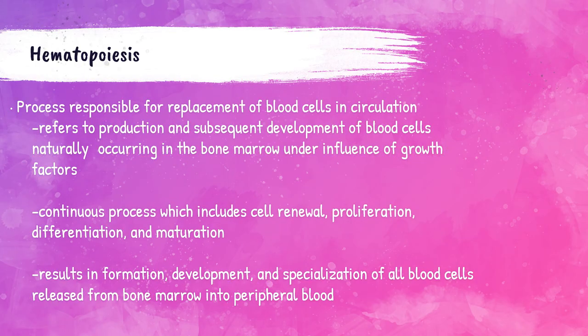Hematopoiesis is the process by which the body produces blood cells that are in plasma. Hematopoiesis is the lifelong process of continuous formation and turnover of blood cells to meet everyday demands, as well as to respond to increased demand due to injury or infections. This is the process that results in the formation, development, and specialization of every single blood cell released into the peripheral blood from the bone marrow.